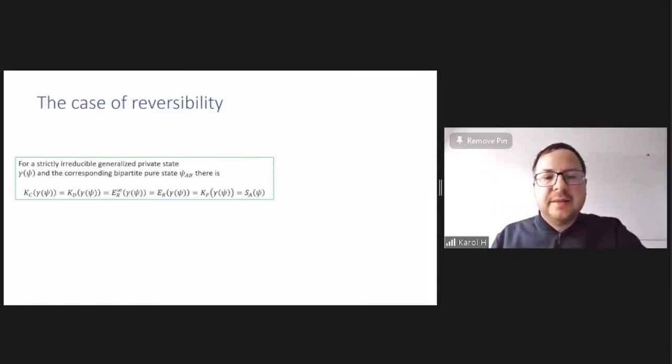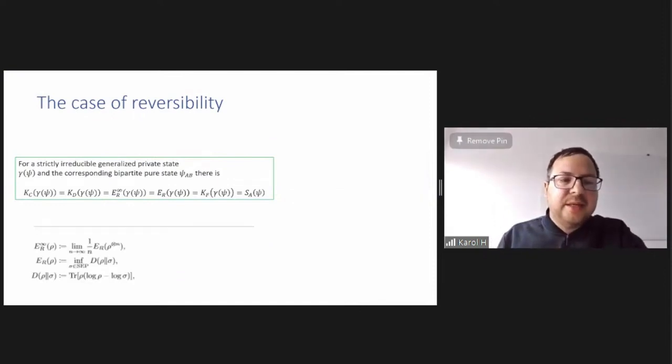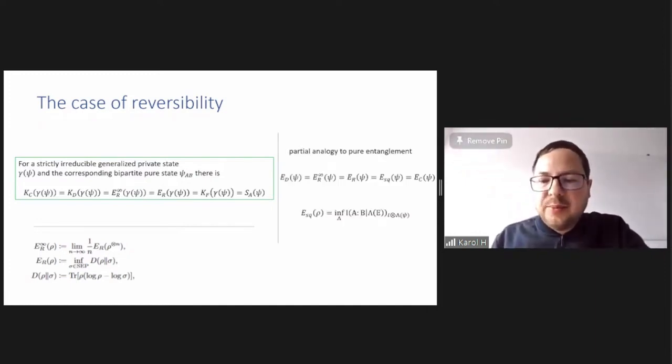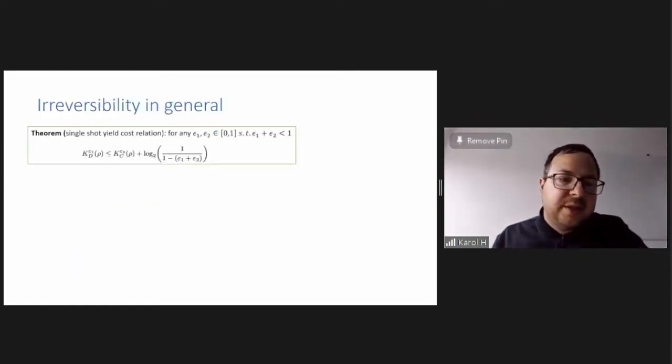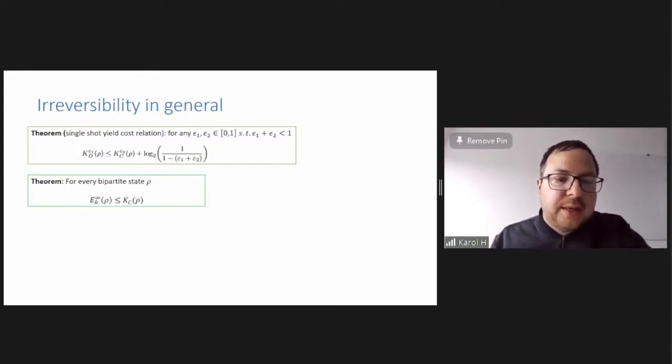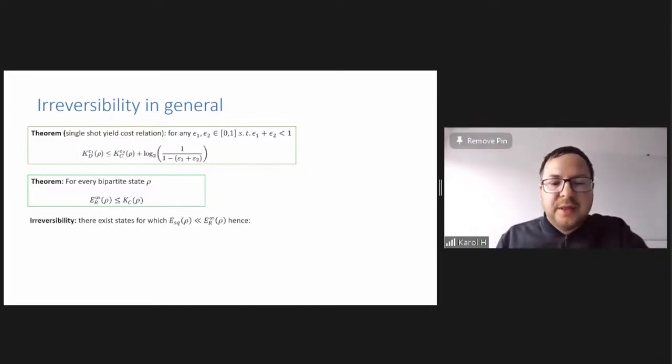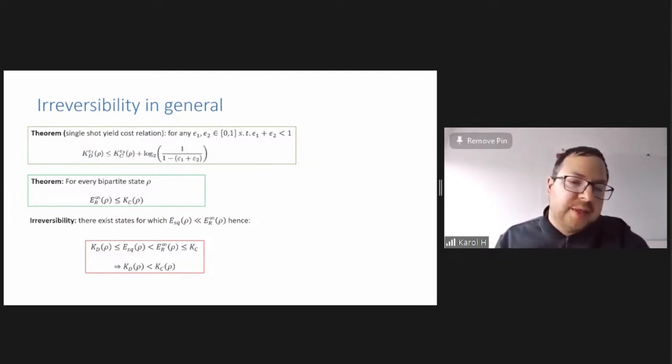First I want to say that there is a reversible case, namely for strictly reducible private states, all the measures like KC, KD, relative entropy, and KF are equal to the local entropy of psi, which is in analogy to pure entanglement. But for squash entanglement, the analogy breaks because squash entanglement is not always less than key cost. That's one result. There's irreversibility in general. So we proved that KD is less than or equal than KC, the key cost. We showed that relative entropy when regularized lower bounds the key cost. And then we proved that there are states for which there is a gap between KD and KC. So there is this irreversibility like in entanglement theory.